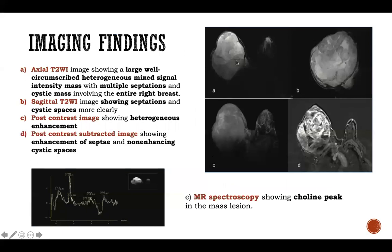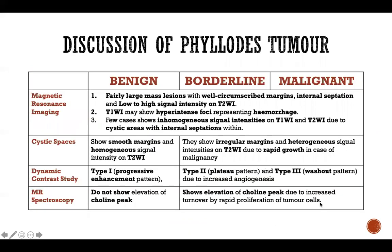These are the imaging findings in one more case. Image A is an axial T2-weighted image showing a large well-circumscribed heterogeneous mixed signal intensity mass with multiple septations and cystic spaces involving the entire right breast. Image B is a sagittal T2-weighted image showing septations and cystic spaces more clearly. Image C is a post-contrast image showing heterogeneous enhancement. Image D is a post-contrast subtracted image showing enhancement of septa and non-enhancing cystic spaces. This is the MR spectroscopic graph showing a choline peak in the mass lesion.